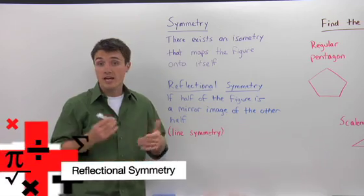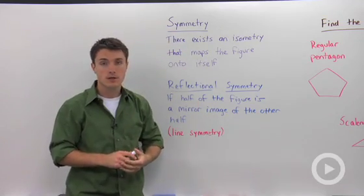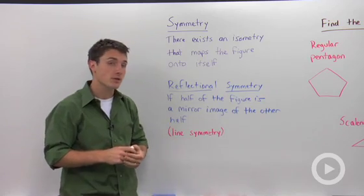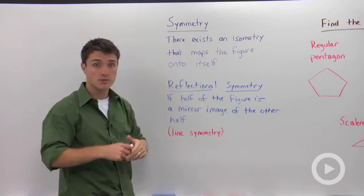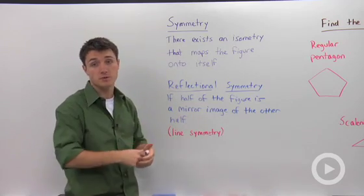There are many objects in geometry and in real life that have symmetry, but how do we define symmetry? Well, an object has symmetry if there exists an isometry - so a reflection, a rotation, maybe even a translation - that maps the figure back onto itself.